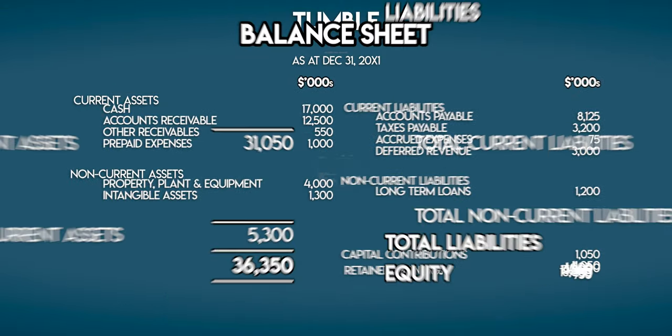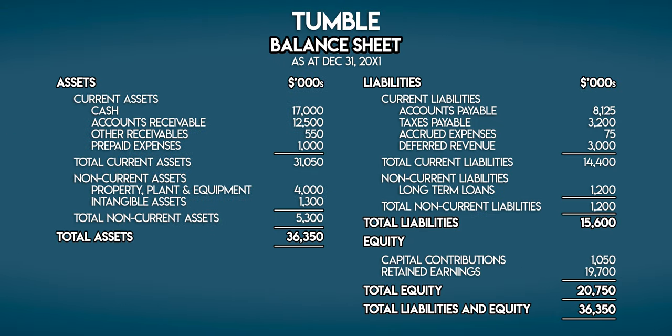We can pick up all these numbers and put them in our detailed balance sheet. We've got current assets of $31,050,000 and $5.3 million in non-current assets. Current liabilities of $14.4 million and non-current liabilities of $1.2 million. Then we have $1,050,000 in common stock, which is a type of capital contribution. And finally, $19,700,000 in retained earnings or profits held for future use. Total assets are equal to total liabilities plus equity, so this balance sheet is in balance.